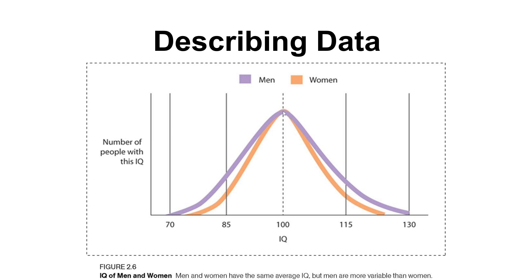The male curve, the purple line, is a little bit wider than the female curve in orange. That wider purple curve has a larger standard deviation, telling us the data points are more spread out away from the average. The female orange curve has a lower standard deviation because it is closer to that mean. We can also see that the range would be different between the two since the highest and lowest scores aren't the same.